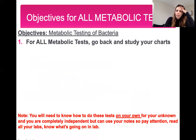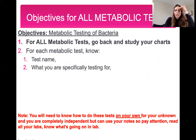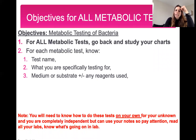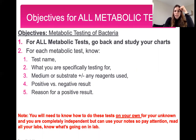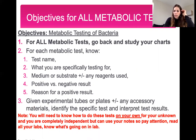The objectives for all these metabolic tests are to study your charts for your lab practical, know how to perform the tests for your unknown, and know each test name, what you're specifically testing for, the medium or substrate used, and what reagents are added. For example, for the urease test: you grow bacteria on urea agar, a positive result is hot pink due to basic ammonia products, and a negative result shows no color change. Be able to read and interpret these tests if given them on your lab practical.